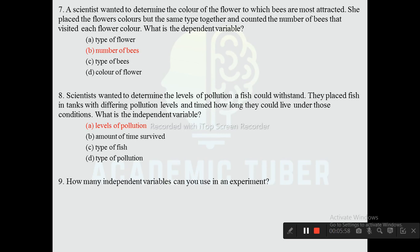Question nine: How many independent variables can you use in an experiment? Options are one, as many as we want, two, or three. The correct answer is as many as we want. For example, the amount of fertilizer, sunlight, carbon dioxide, and water can all be independent variables for the growth of a plant.